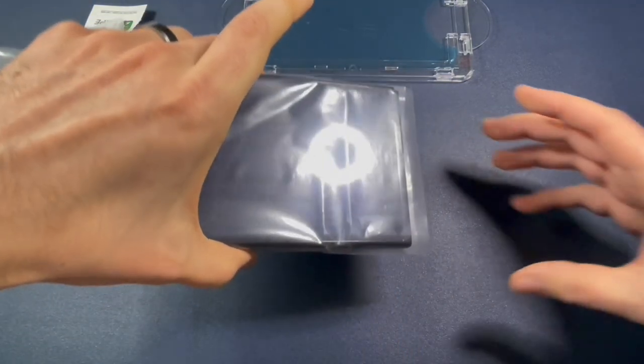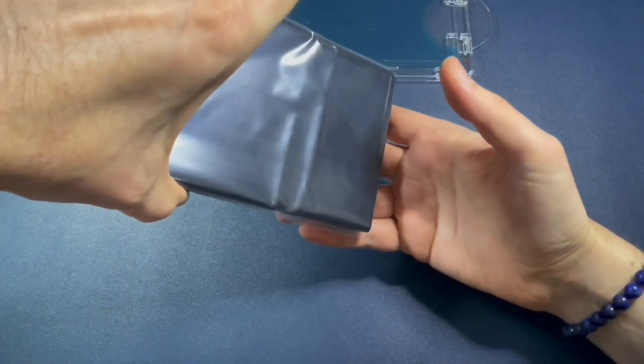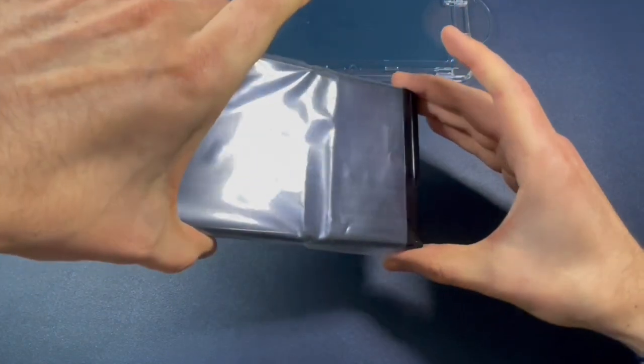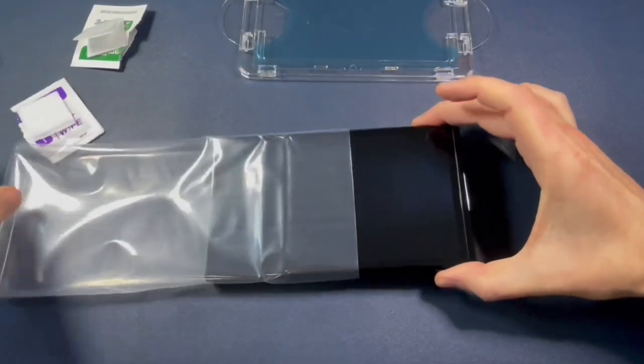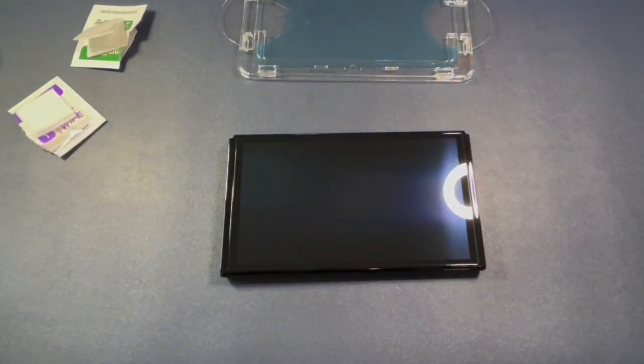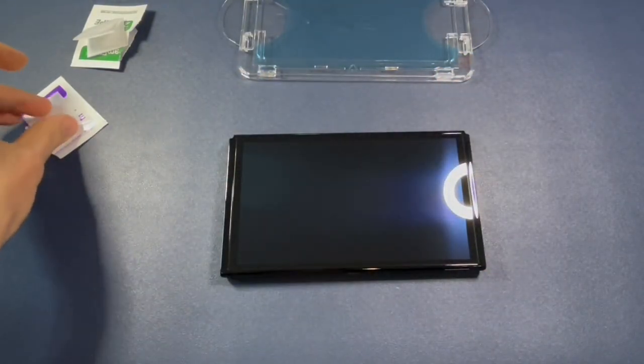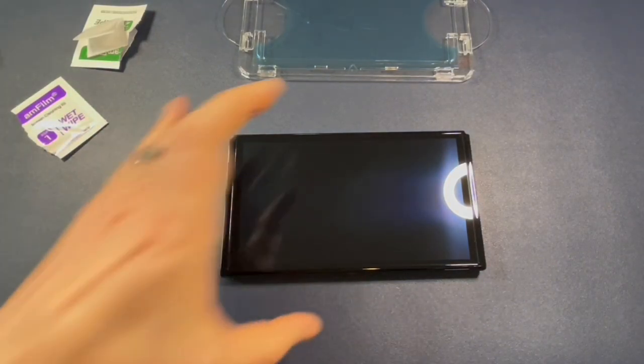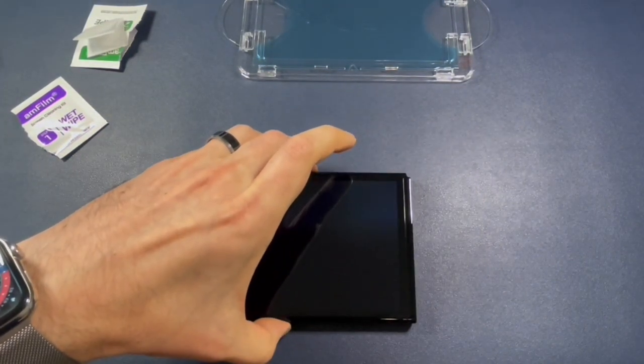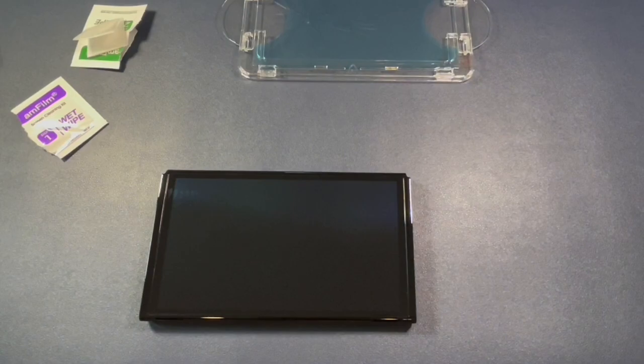So we're going to go pretty quick here because the longer you take, the more dust will accumulate on your Nintendo Switch OLED screen. We're pulling it off here. You can see there's already one piece of dust, two pieces of dust. First step. Just get it centered right here for me because I need to see this baby. First step is the wet wipe.